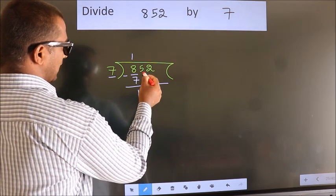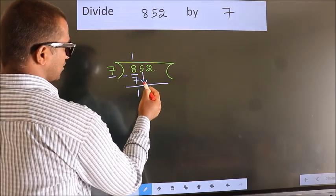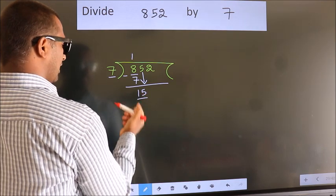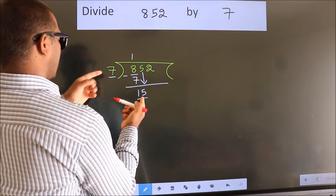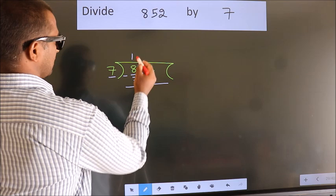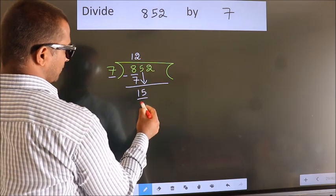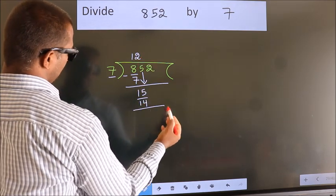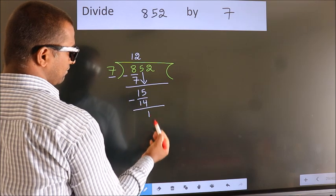After this, bring down the beside number. So, 5 down. So, 15. A number close to 15 in 7 table is 7 twos 14. Now, we subtract. We get 1.